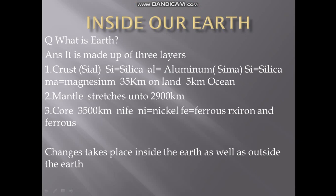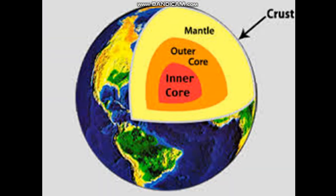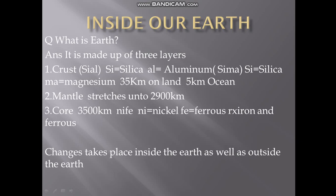The crust is made up of soil, rocks, and a number of minerals. You can see in this picture - the fine blue line at the top is our crust. Below the crust is the mantle, and then the core. The core is divided into two parts: the outer core and the inner core.